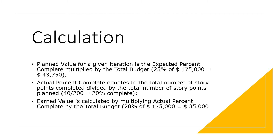It is important to note that in agile EVM, there is no credit for partial completion. Backlog items are either done or not done — that is, 0 or 100%. In keeping with agile terminology, a backlog item is only complete and story points awarded when the customer accepts the item as done.